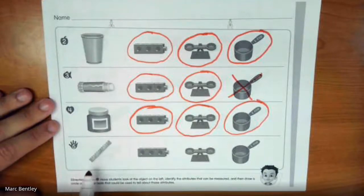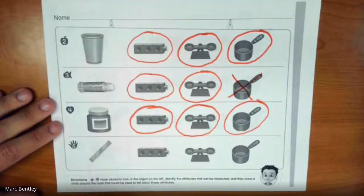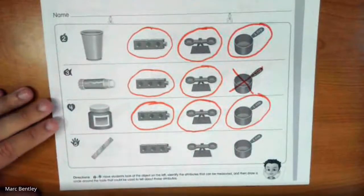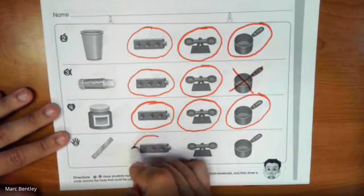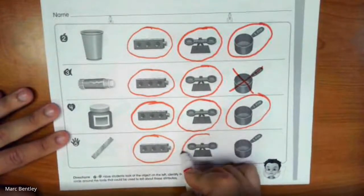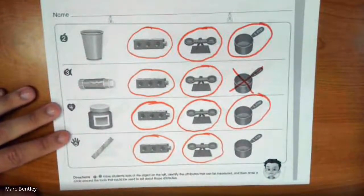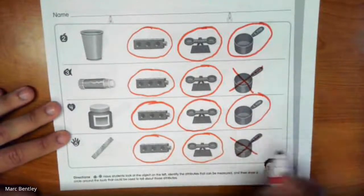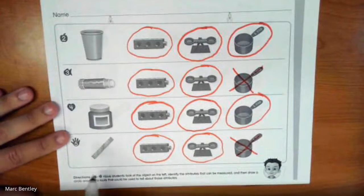Number five, we have a ruler. Could we measure a ruler's length? Yeah, 100% we could, and it also should tell us on the ruler most of the time how long that is, so I'm going to circle that. We could also measure the ruler's weight, but couldn't measure its capacity because there's nothing to fill it with, it's a solid object.